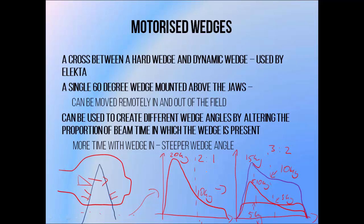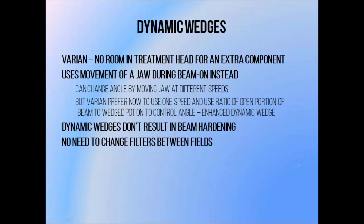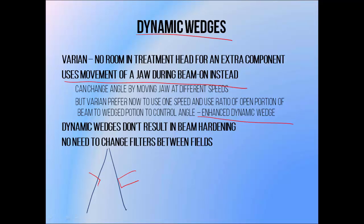A greater proportion of the beam delivered with the wedge in place means a steeper wedge angle. Varian have already added an MLC to their treatment head, so they don't have room for an extra component. Instead of adding a motorized wedge, they create wedged fields by moving the secondary collimator jaw through the beam while it's still on. This is known as dynamic wedging. Varian uses something called an Enhanced Dynamic Wedge, or EDW, which is similar in approach to the motorized wedge — a single jaw speed, so a single wedge angle, delivered in combination with an open beam to generate different beam angles. Because we're not passing the beam through a filter, it doesn't result in beam hardening or affect the spectrum of the beam. And just like Elekta's motorized wedge, it can be controlled from outside the treatment room, allowing for faster treatment times.